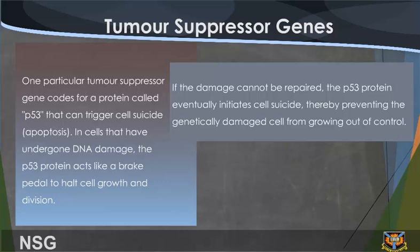One particular tumor suppressor gene codes for a protein called P53 that can trigger cell suicide, apoptosis, in cells that have undergone DNA damage. The P53 protein acts like a brake to halt cell growth and division. If the damage cannot be repaired, the P53 protein eventually initiates cell suicide, thereby preventing the genetically damaged cell from going out of control.